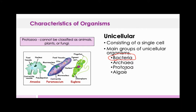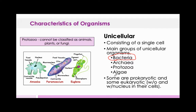Protozoa are actually a eukaryote. If you remember back when we talked about cells, there's prokaryotic and eukaryotic — protozoa are eukaryotic, they have a nucleus in them. And algae is like a plant; plants are able to produce their own food, so algae is going to be an autotroph. Most of the others are going to be heterotrophs.